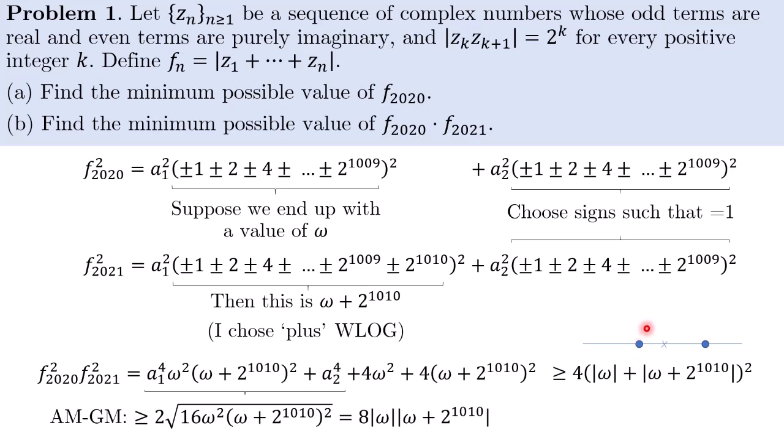And then when we add 2^1010, we end up with something on the other side of zero. Then the absolute value of omega plus absolute value of this thing is exactly the distance between the two blue dots, which is 2^1010.